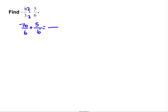Six is the size of my pieces — that's going to stay the same. Once you find that common denominator, it stays the same all the way through the problem. Negative 16 plus positive 5: different signs, find the difference. I'm thinking 16 minus 5, which is 11. I have more negatives, so my answer is going to be negative: negative 11 sixths.